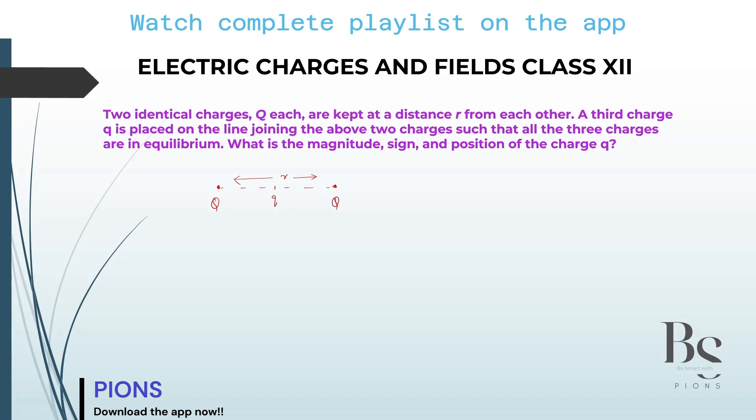Now we use a very important concept. If two people are already stable, the force acting between these two should be equal to the force acting between this and this. Now some students have a confusion: why are you taking this small q and capital Q? You can take this and this also. Yeah, you can take the same thing. Magnitudes are same.